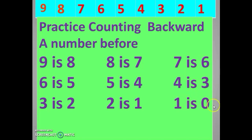And before one? It is zero — nothing. Before one, nothing is there so we say zero. Because one is the starting number, before it we can put zero.